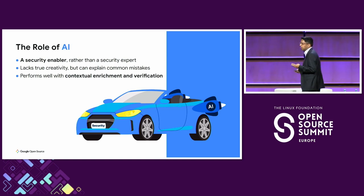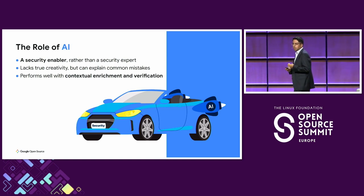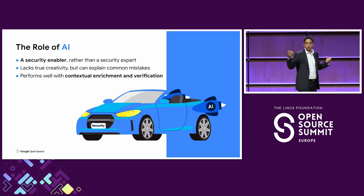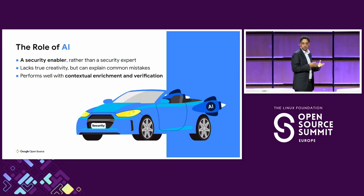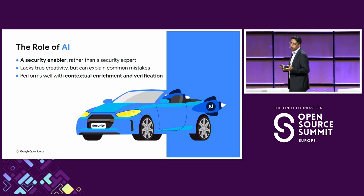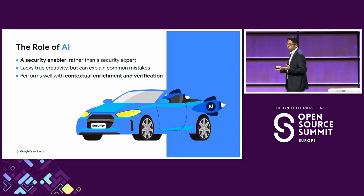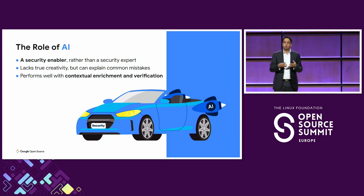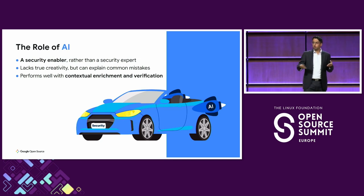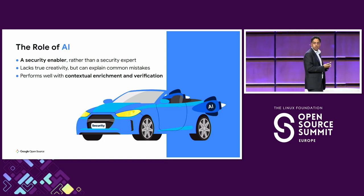The third element we will talk about today is AI. AI is something that everyone is talking about these days, and it has the true potential to revolutionize security. But we also need to understand its current limitations as it stands today. It can be a great security enabler, but lacks in comparison to a human security expert with very deep contextual understanding. We have seen some really great results with AI when we can augment its prompts and training with more context, and also add a verification step at the end that can validate the results — so if there are any inaccuracies, we can feed them back to the LLM to auto-correct itself.